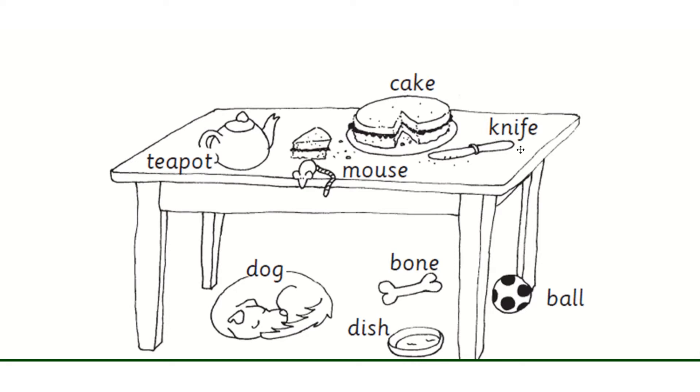Remember that word knife starts with the sound N but it actually has a silent K at the beginning. And under the table there's a dog, fast asleep, a dish, a bone and a ball.